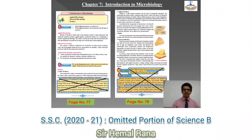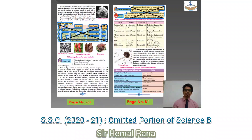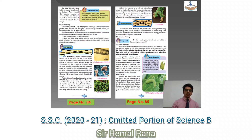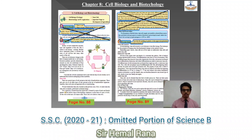Coming to Chapter 7, Introduction to Microbiology: on page 77 the last paragraph has been removed; on page 78, 'Let's Think' and 'Do You Know' have been removed. On page 80, the table of production of beverages has been removed. On page 81, 'Use Your Brain Power — Search' has been removed. On page 82, 'Can You Tell' has been removed, and on page 83, 'Let's Think' has been removed. On page 84, 'Can You Tell' is removed, and on page 85, 'Internet My Friend' has also been removed.